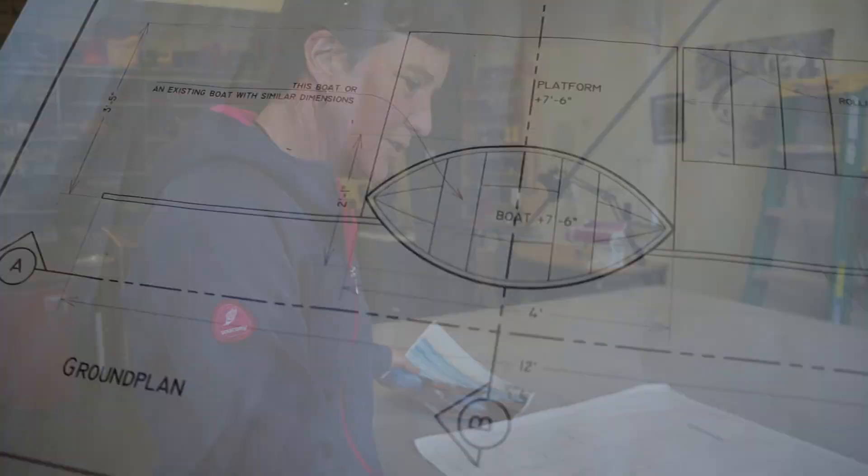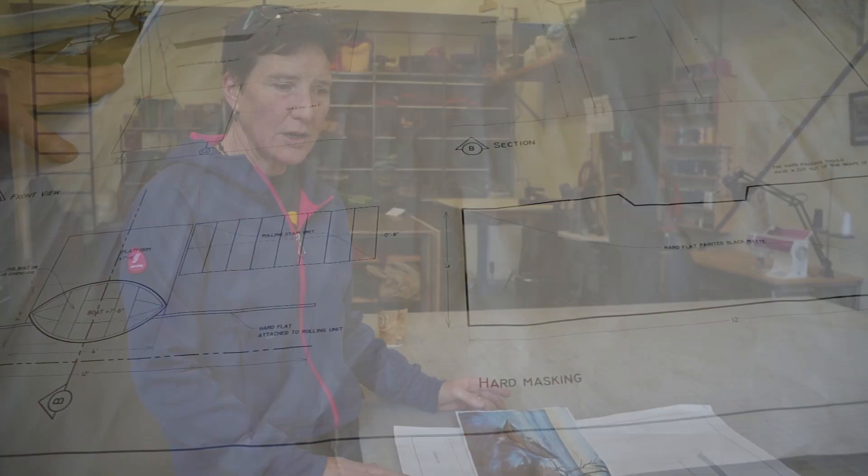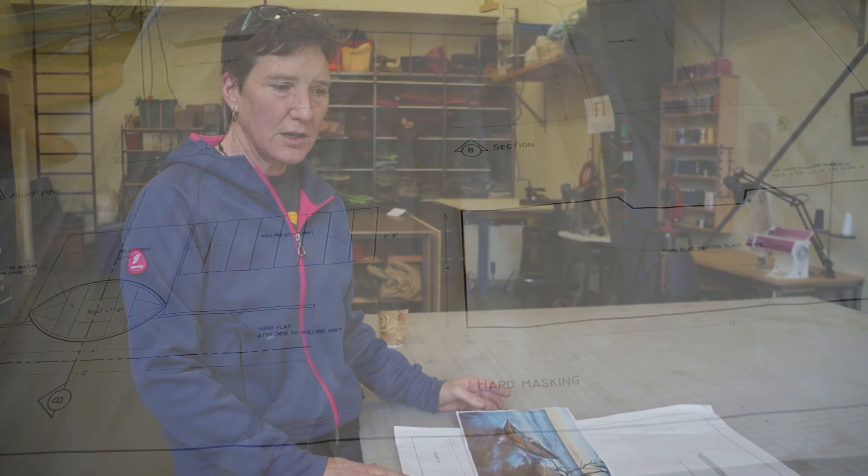So here you can see the drawing that I was given. Mariana essentially wanted something that kind of looked like a dugout canoe. So she made me a nice drawing, but what really helped me was her finding this research photo.